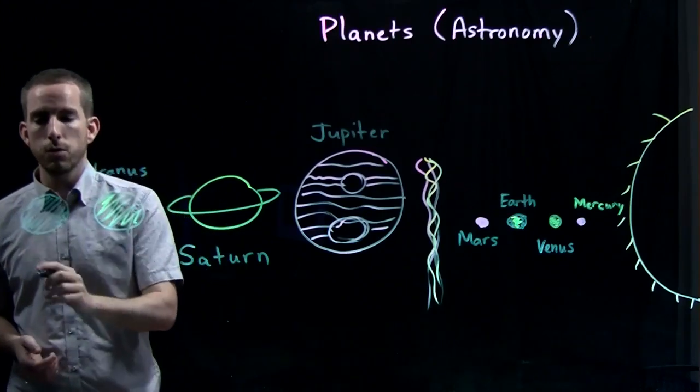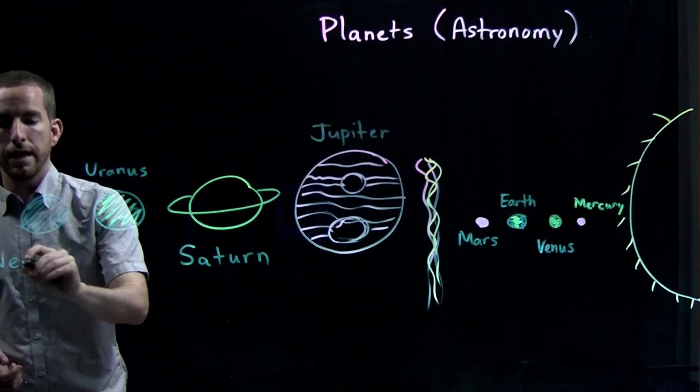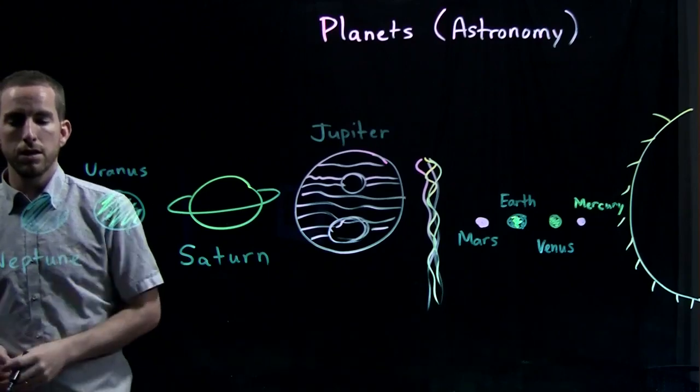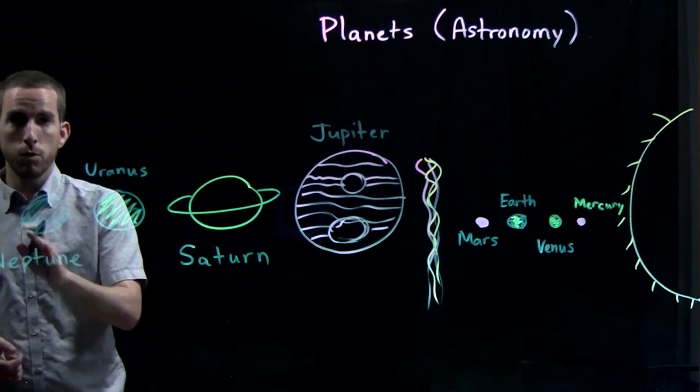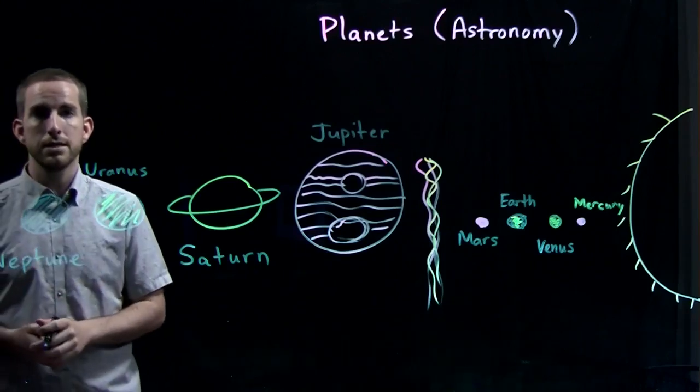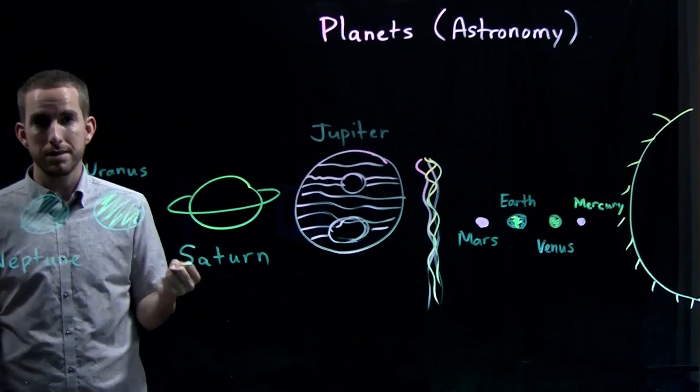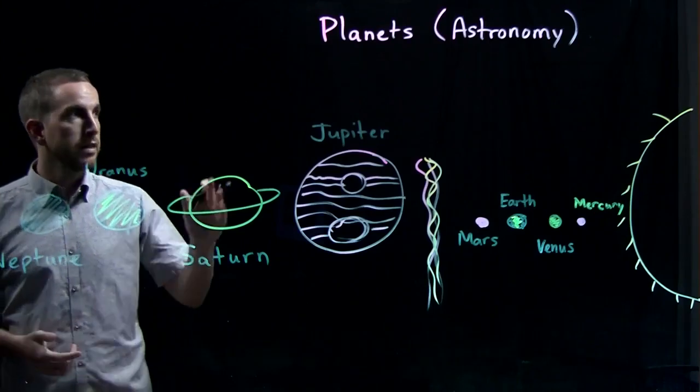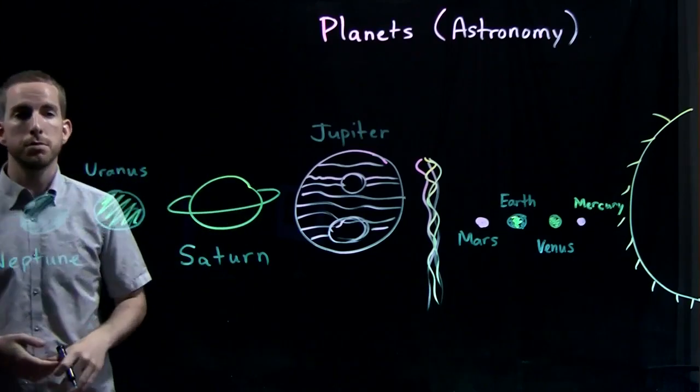And the last one is Neptune. And if you ever read Roman myth you probably know Neptune. And in Greek myth his name is Poseidon. So these are the planets. We talked about the planets today.